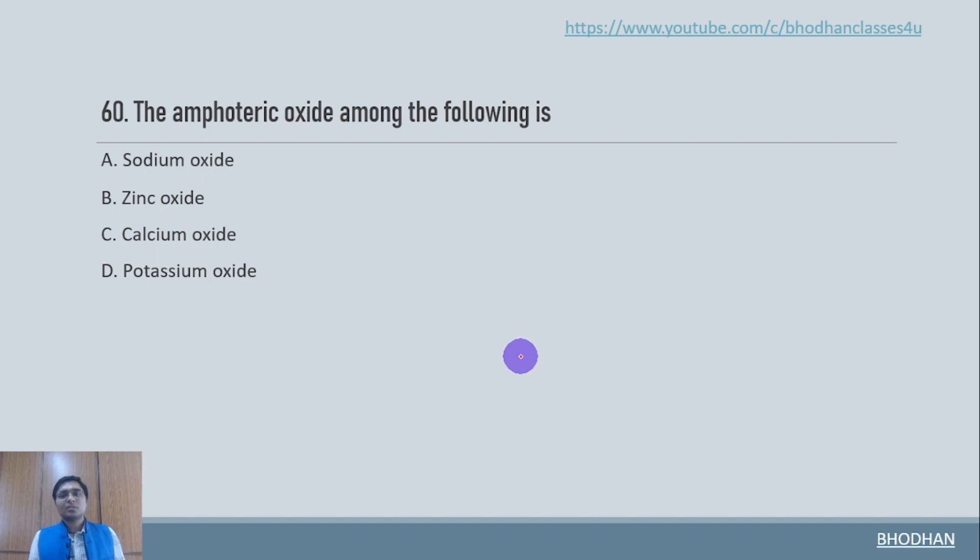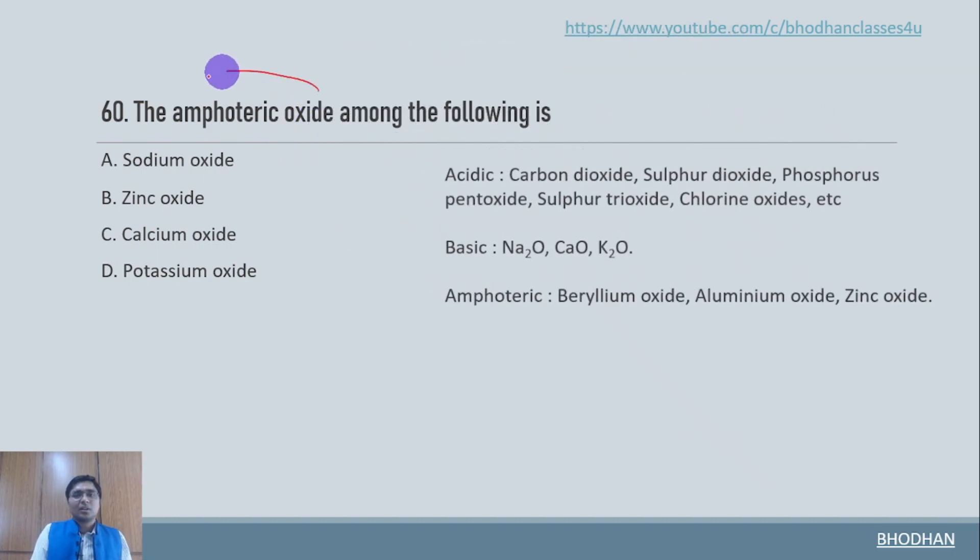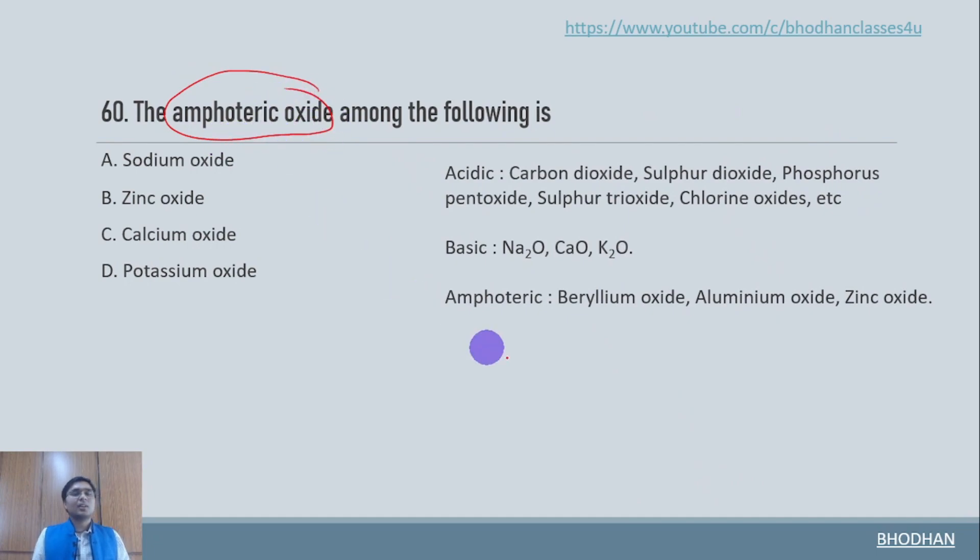The amphoteric oxide among the following. So now what do you mean by amphoteric oxide? Amphoteric oxide is that particular oxide which is going to show both acidic as well as basic nature.